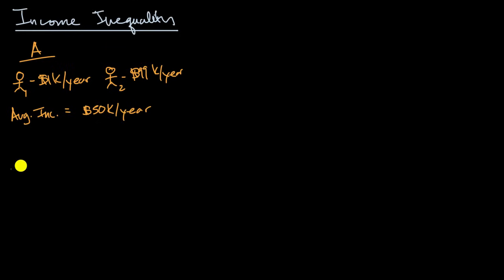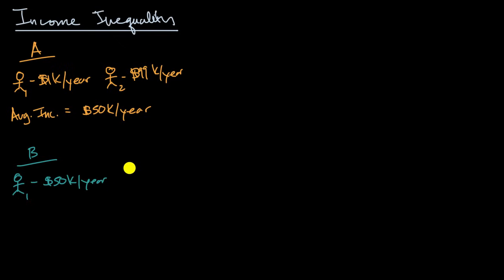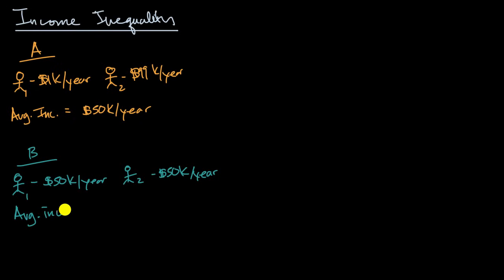Now let me construct another country that has the same average income, but the distribution is very different. In country B, the first citizen makes $50,000 a year, and there's a second person who also makes $50,000 per year. What's the average income now? This is even easier to compute: 50 plus 50 divided by two — the average income is $50,000 per year.